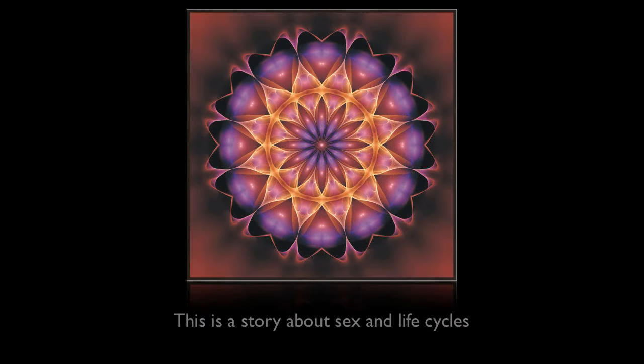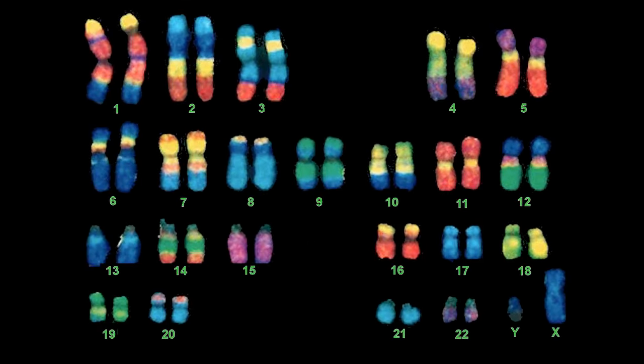This story is really going to be about sex and life cycles. I think it's good to start with something you're familiar with and then build on information that may not be so familiar, so that your brain has something to attach it to. So we're going to start with humans, actually. These are human chromosomes organized so you can see all 23 pairs. This is called a karyotype, by the way.